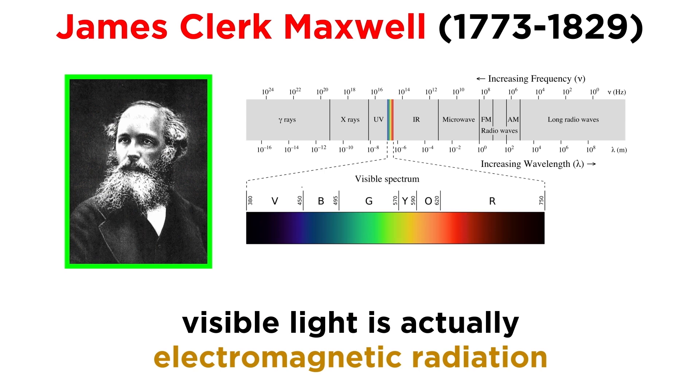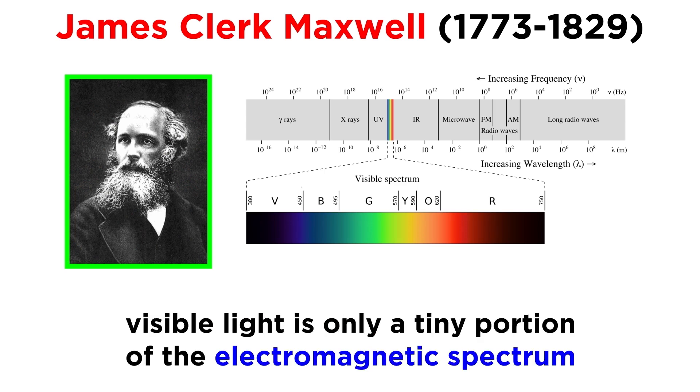Later, James Clerk Maxwell developed his theory of electromagnetic radiation, and showed that visible light is only a tiny section of a vast spectrum of electromagnetic waves, which further discredited the particle model.